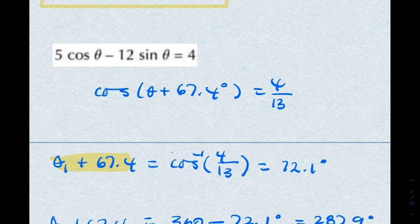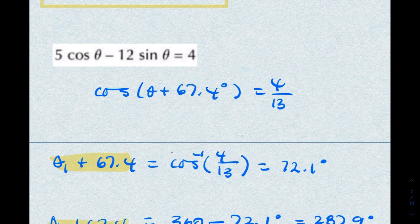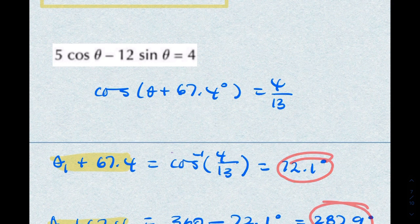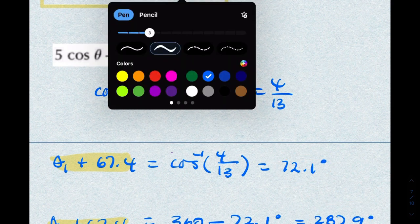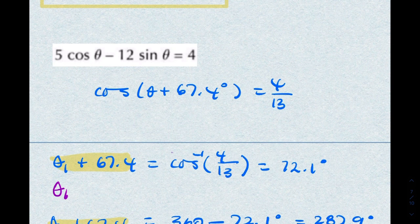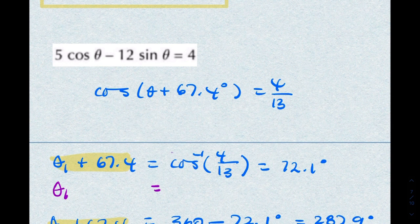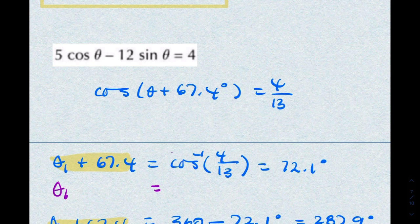Now, once you've found theta plus 67.4, you need to subtract 67.4 from both of these. So we'd say theta 1 equals 72.1 minus 67.4, that will give you 4.7.